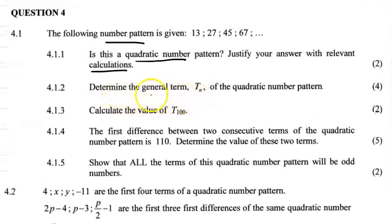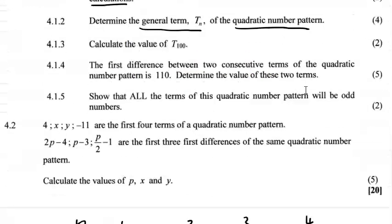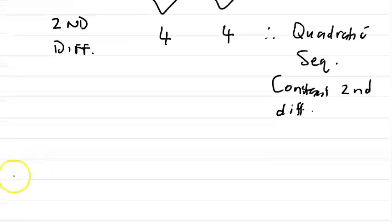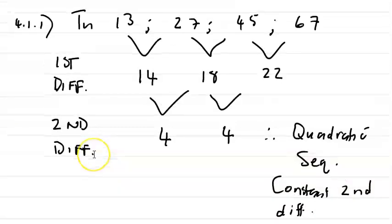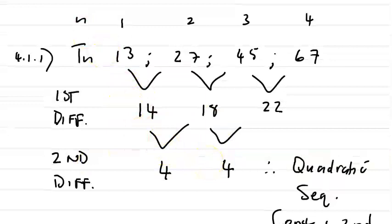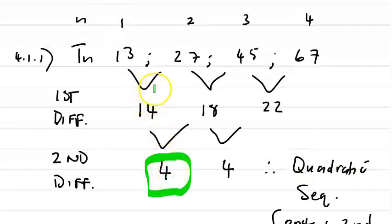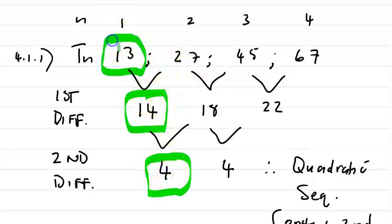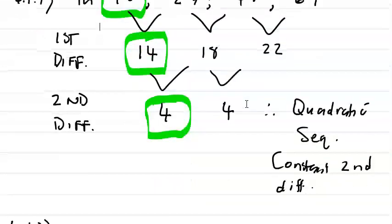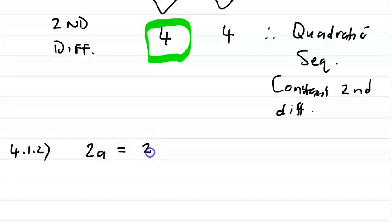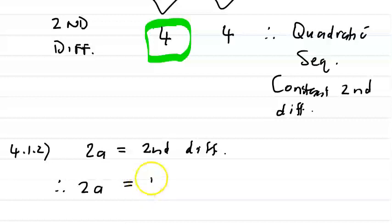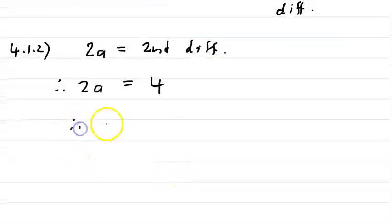Now they're telling us to determine the general term TN of the quadratic number pattern. To find the general term we're going to follow these steps. 4.1.2. We need three key values: the second difference (which is 4), the first term of the first difference (T2 minus T1), and term number 1. Step 1: 2a equals the second difference. Therefore, 2a equals 4, so a equals 2.